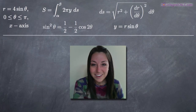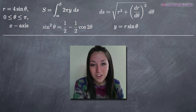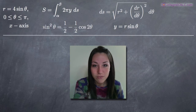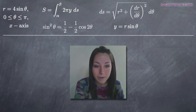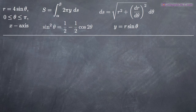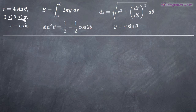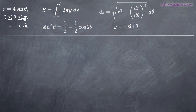Hi everyone! Welcome back to integralcalc.com. Today we're going to be talking about finding the surface area of revolution of a polar parametric curve. In this particular problem, we've been given the polar curve r equals 4 sine theta, and we've been asked to find the surface area generated by revolving that polar curve around the x-axis on the range zero to pi.